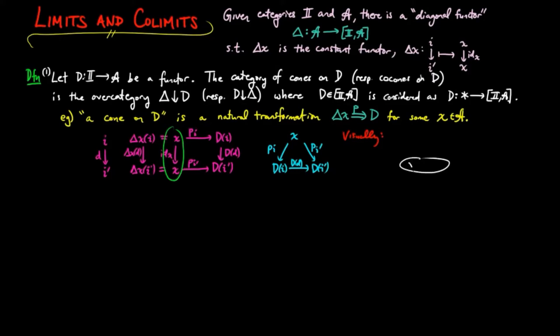Visually, we have a cone on D as an object x along with morphisms pi for each I object i, which is compatible with the I structure. And this is where the terminology cone comes from. We can then write a cone as a collection indexed by the objects of I of A morphisms from x to D(i), with the naturality condition left implicit.